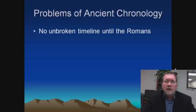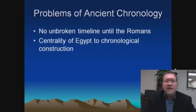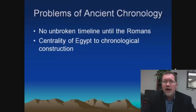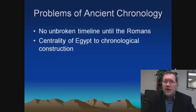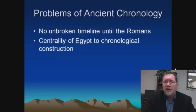Most historians try to solve this problem of putting dates on ancient events by relying on the chronology of Egypt. Egypt has a long and unbroken civilization that goes for thousands of years up until the first century BC, at which time the Romans conquered it. So most historians will try to put together a timeline for Egypt, date everything in Egyptian history, and then look at other civilizations — Assyrians, Persians, whoever — and try to find correspondences between events in those civilizations with the Egyptians, and plug those other civilizations into the Egyptian timeline. It's a fairly reasonable approach, but it does have a couple of issues.